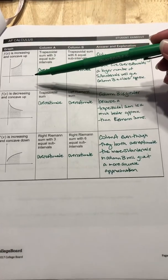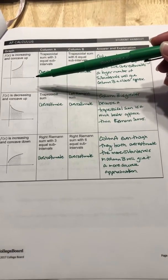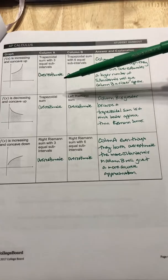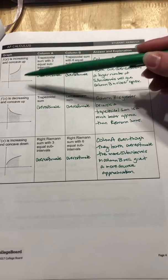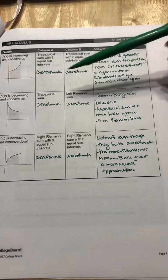So the trapezoid sum, the trapezoid whole sum overestimates for concave up. So they're both going to be overestimating.